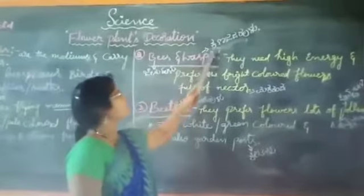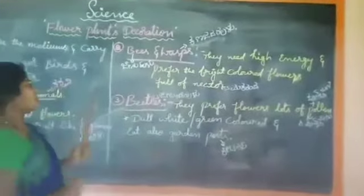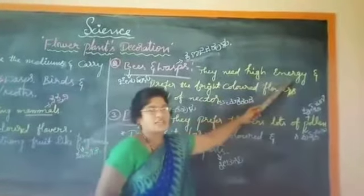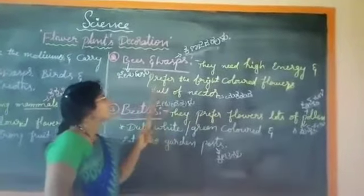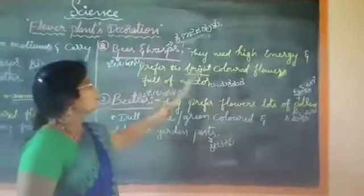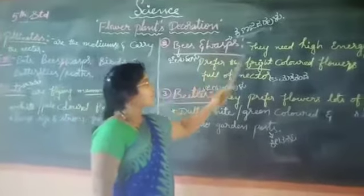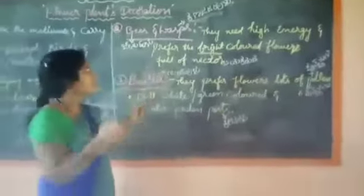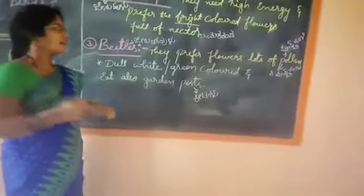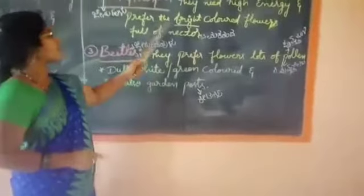Bees and wasps. They need high energy. Apart from bright colored flowers, they prefer brightly colored flowers. They need high energy. It's a bright color, full of nectar. Nectar is sweet. If you want to call it sweet, you can call it sweet.